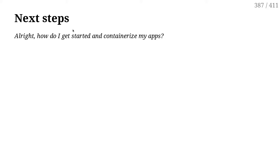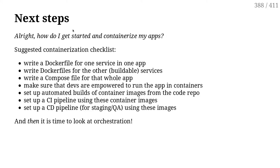If I were to briefly meet someone in the elevator and they ask me, 'I've been tasked to containerize a bunch of apps, what should I do first?' My response wouldn't be immediately, 'just install Kubernetes.' The first thing — my personal roadmap — is start by containerizing one application. And to containerize one application, you start by containerizing one specific service for that application.